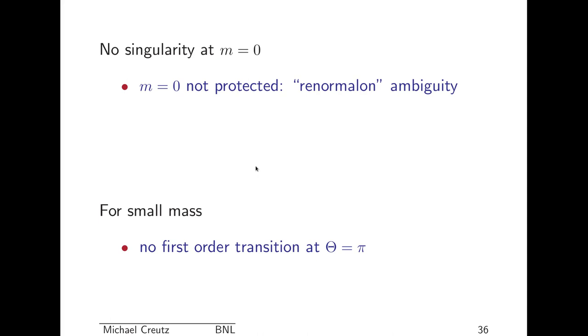So to summarize what's in this talk, QCD with N_f massless flavors has a very nice flavor singlet discrete Z_N_f chiral symmetry. There's a first-order transition at theta of pi whenever the quark masses are not vanishing. So you turn on a little bit of quark mass and you get this first-order transition. The sign of the mass is significant for an odd number of flavors. This is not seen in perturbation theory. There is no symmetry for N_f equals one, and so the massless quark is unprotected. I will return to all of these issues in the last lecture. So thank you all, and we'll talk to you later.